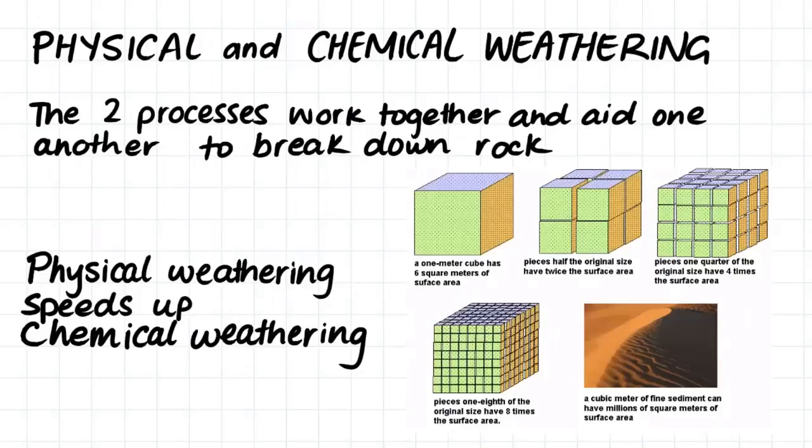We will now talk about how the level of physical weathering can actually affect the amount of chemical weathering that can occur. Physical and chemical weathering are two processes that work together and aid one another to break down rock. We can see from this diagram here that the amount of physical weathering, the number of joints that have occurred through a rock, produces more surface area of the rock, which can then be attacked by chemical weathering. Therefore, physical weathering speeds up chemical weathering.